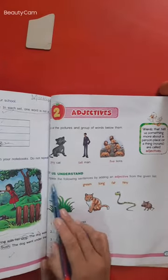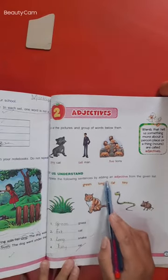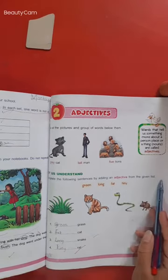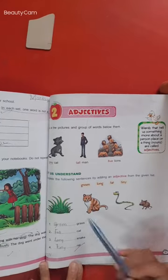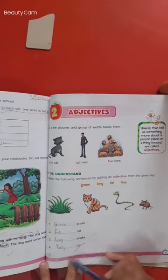Let us understand: complete the following sentences by adding an adjective from the given list. Here we have written these words in this list. The suitable word we have to write here.